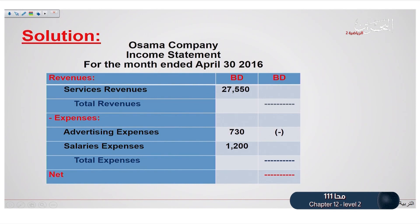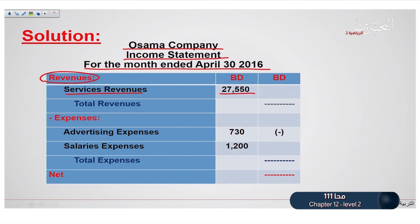In this slide, we have Osama Company as the name of the company. We have specified that we are using an income statement, and we have written the period for this income statement, which is for the month of April 2016. We have listed the revenues — we started with service revenue and the amount, $27,550. The total revenues are written here because we only have one revenue. Then we list our expenses: advertising expense and salaries expense, with the total expenses being $1,930.